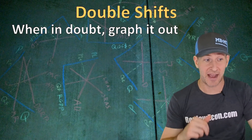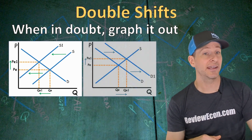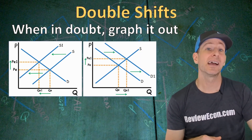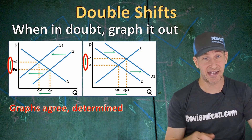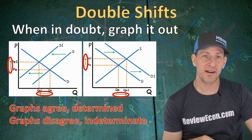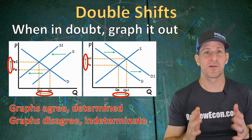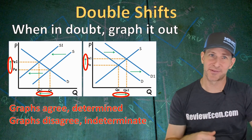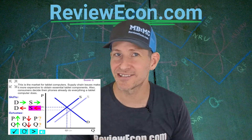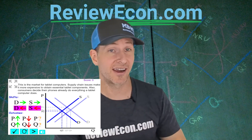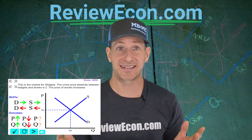For example, a decrease in supply increases price and decreases quantity, and if a second change increases demand that raises price and increases quantity. Since both price changes agree, price is determined — in this case a price increase. But the quantities disagree and are therefore indeterminate. Graph them together or separately, whichever works for you. And there you have it — that is everything you need to know about equilibrium, disequilibrium, and changes in equilibrium. Head over to ReviewEcon.com for the market changes game and the total review booklet to ace your microeconomics or macroeconomics exam. I'll see you all next time.